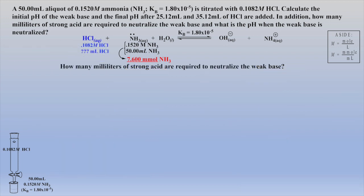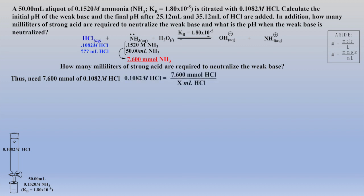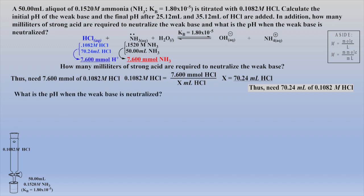To calculate how many milliliters of acid of known molarity are required to neutralize an aliquot of weak base of known molarity, it is helpful to first write down given quantities directly under each species. At the equivalence point, millimoles of weak base will equal millimoles of strong acid required. We first convert given quantities of weak base to millimoles, which tells us how many millimoles of acid are needed. Rearranging the molarity expression allows us to calculate the milliliters of acid required. There are 7.6 millimoles of conjugate acid per total volume, affording a molarity of 0.06321.